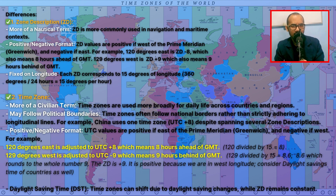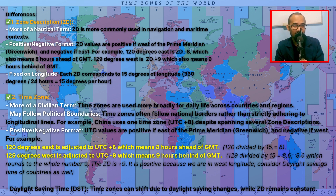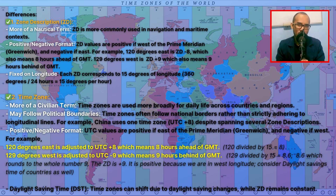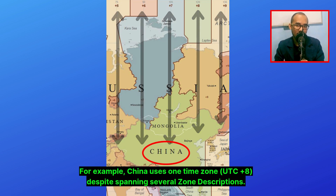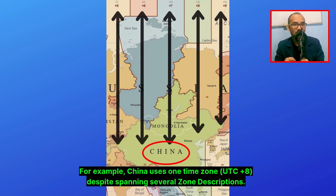Time zone is more of a civilian term. Time zones are used more broadly for daily life across countries and regions, and may follow political boundaries rather than strictly adhering to longitudinal lines. For example, China uses one time zone, UTC plus 8, despite spanning several zone descriptions.